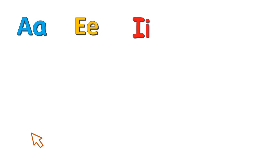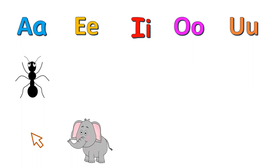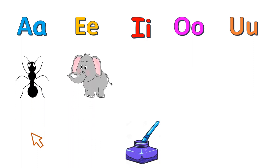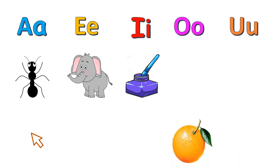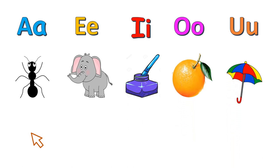So, let's get started. A, E, I, O, U are the vowels. Ant, Elephant, Inkpot, Orange, and Umbrella are words beginning with vowels.